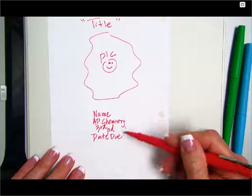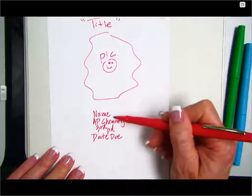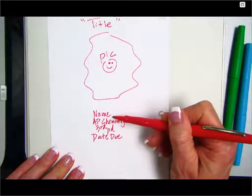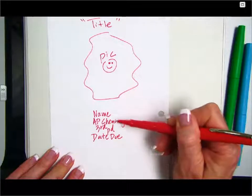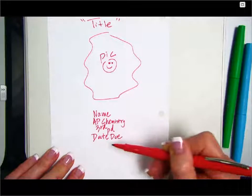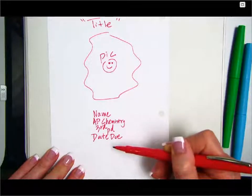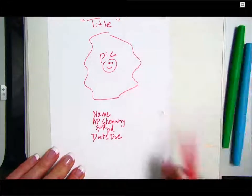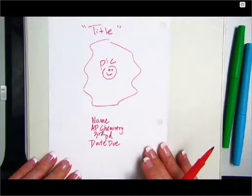The heading down here should be in a smaller font and it should all be centered and it should be your name, first name, last name, AP Chemistry, third period, and then put the due date of the lab. This will be the proper title page format for any lab that we do.